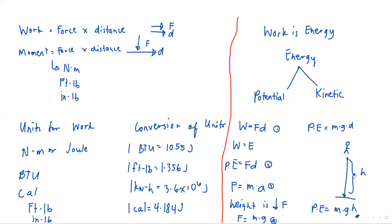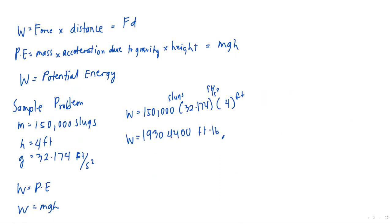We've completed potential energy. The formula is PE = mgh, where g is acceleration due to gravity and h is the height or altitude. You can also try converting the answer to other units for practice. Now let's move on to kinetic energy.